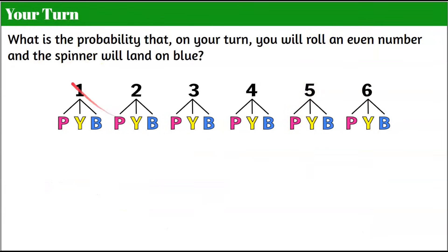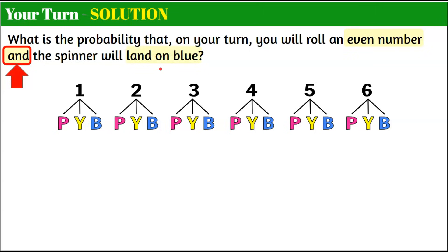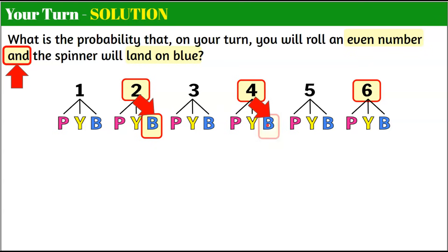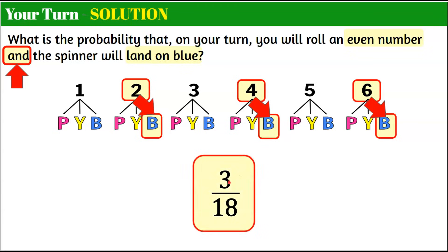Now it's your turn. What is the probability that on your turn you will roll an even number and the spinner will land on blue? Go ahead and pause and come back when you're ready. Welcome back. We're going to find the probability of an even number and landing on blue. Our even numbers are two, four, and six. For each: two-and-blue, four-and-blue, and six-and-blue. So three outcomes out of 18 are an even number and blue — probability of three out of 18, which simplifies to one over six.